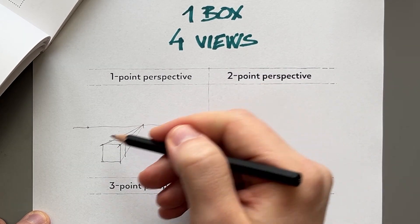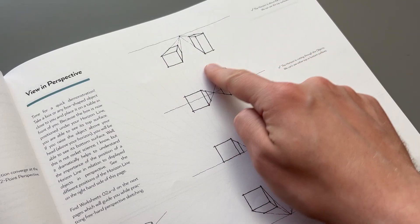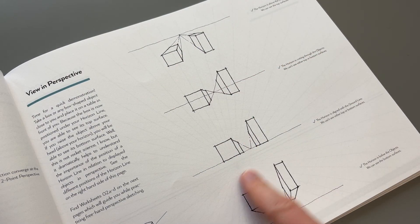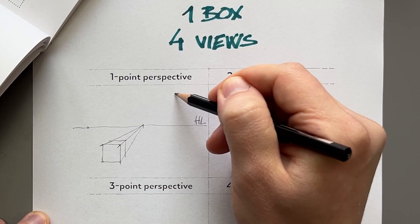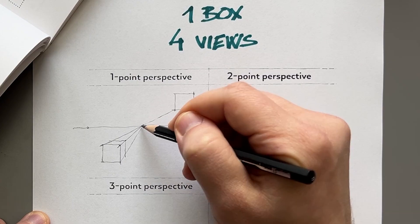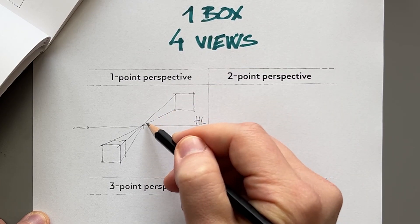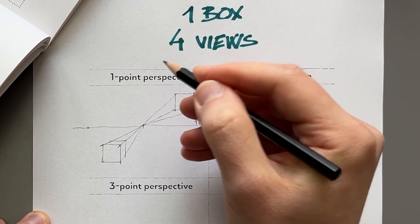Now I can draw the box below the horizon line so I can see its top surface, or I can draw it above the horizon line and again connect the vanishing point to the corners.